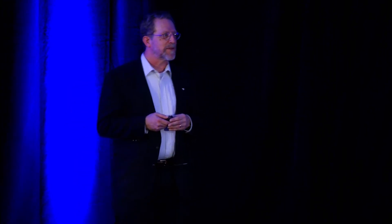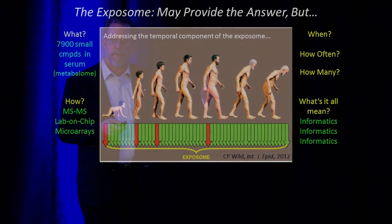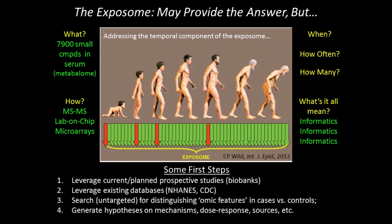So what are you going to do? Well, people have suggested, mainly Rappaport and Wilde, suggesting now that we take some baby steps first. Leverage current prospective studies that are in the process of archiving samples. Howard alluded to one earlier today, the notion of biobanks, which is gaining traction in the field. Leverage existing databases like NHANES and other CDC databases. And then go in and do your untargeted search and try to find these omic features that would distinguish cases from controls, and then try to generate some hypotheses from there about mechanisms, dose response, and sources.